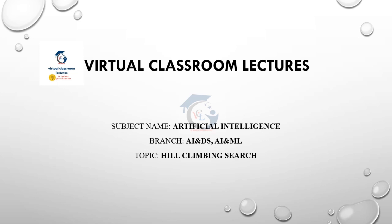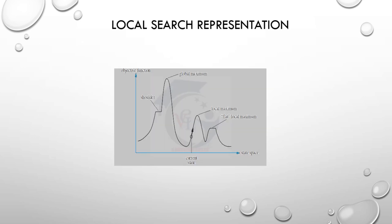Today we will see hill climbing search under local search. What is local search algorithm and local search representation? In previous search techniques, we search and reach the goal node — whichever node has minimum cost, we reach that node, then reach the goal state. Sometimes we backtrack. But in local search algorithms, we do not backtrack; we find the best one-path way to reach the goal node with minimum cost. This is memory efficient compared to previous search strategies.